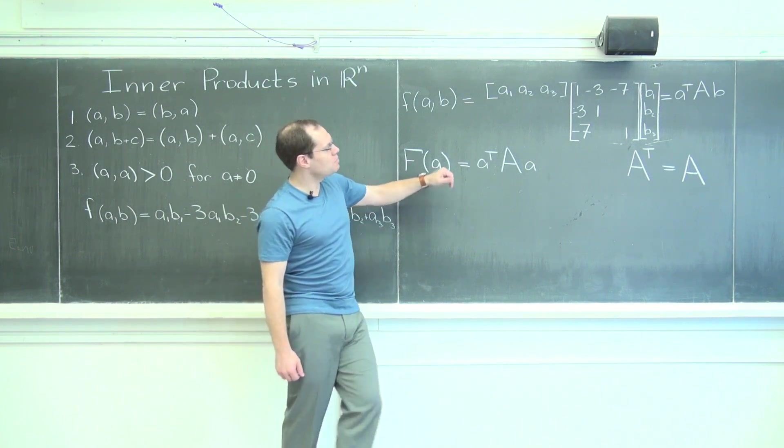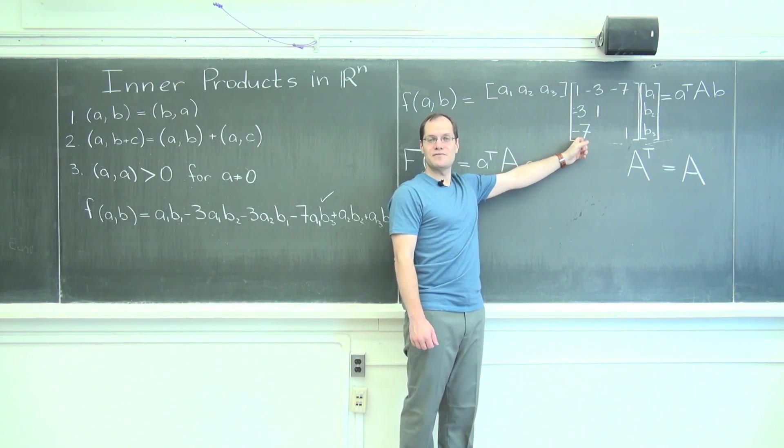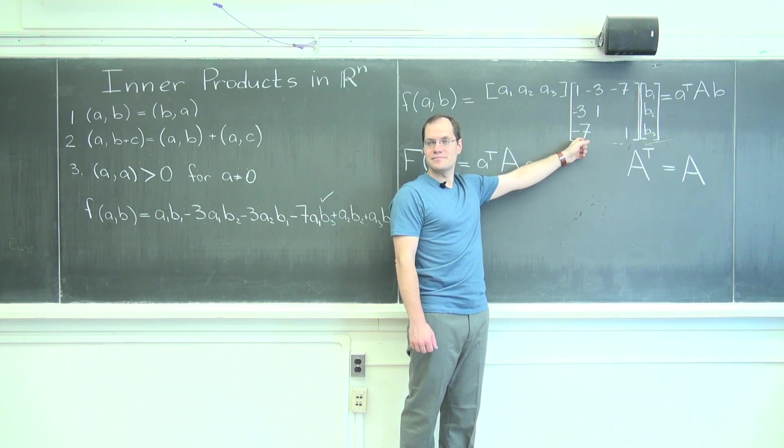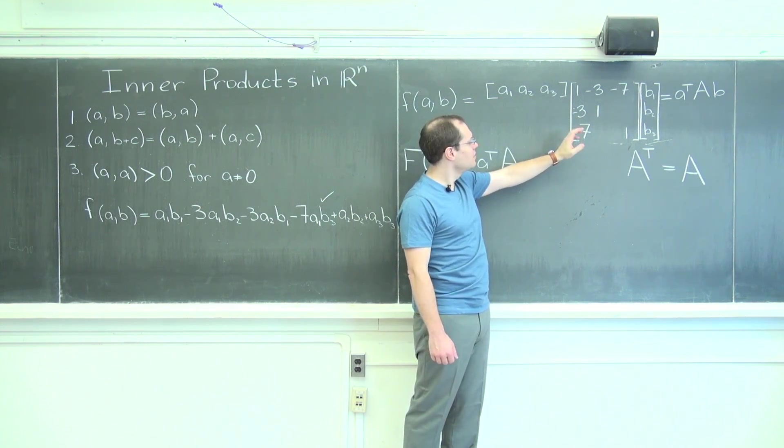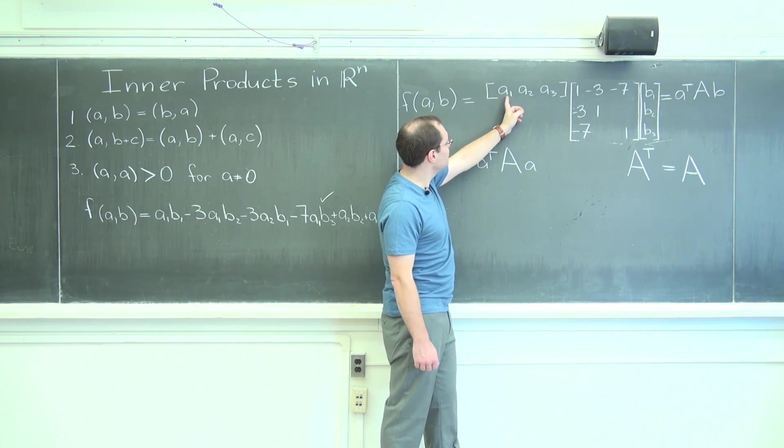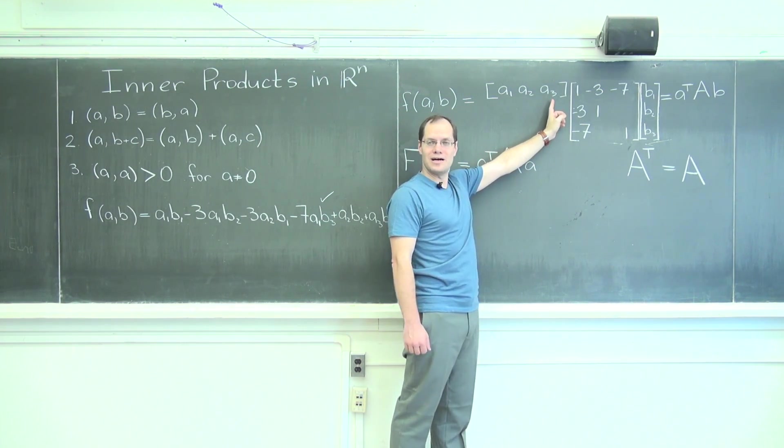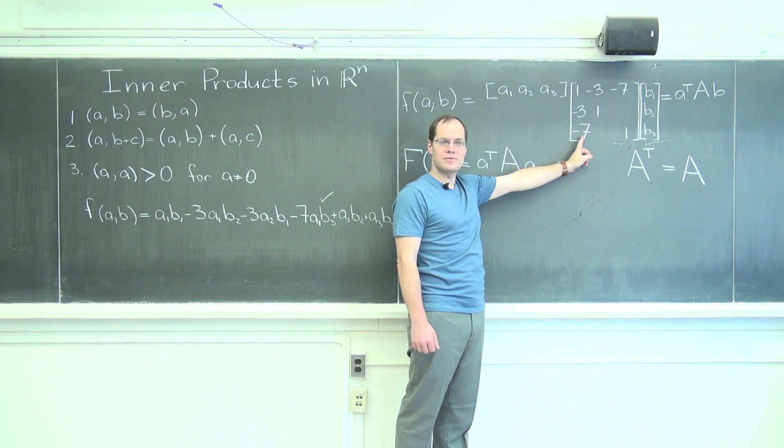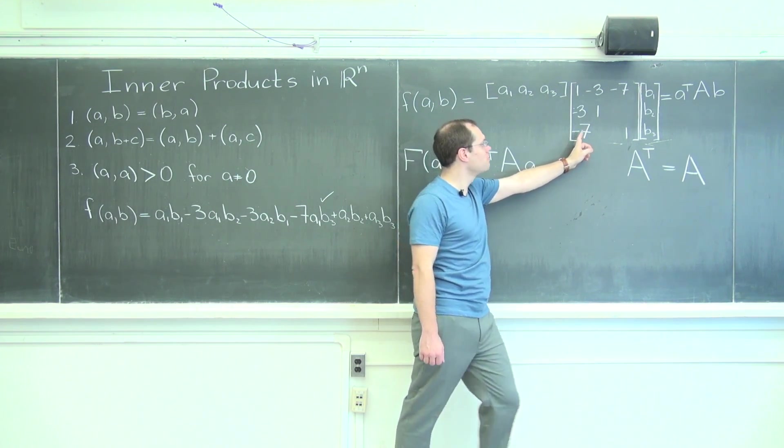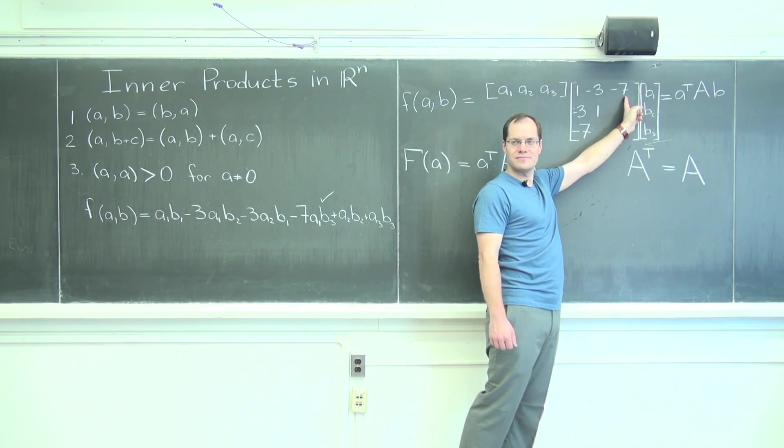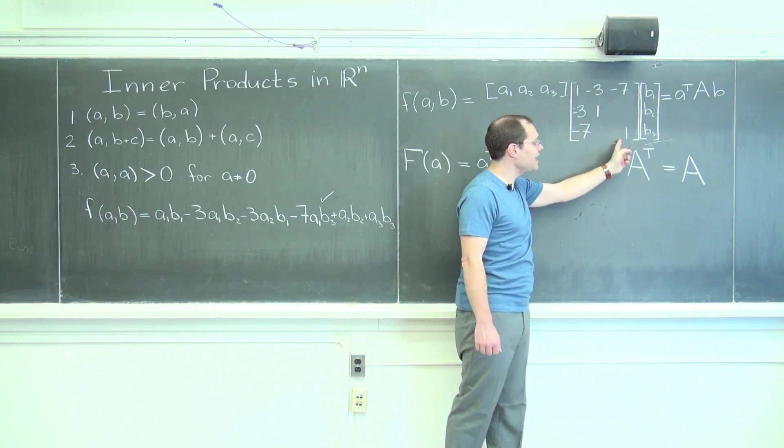And here you would probably guess no, because of this minus seven. You will think of some, of a vector, which probably has a one here and a one here, one-zero-one. And this term and this entry right here will contribute minus fourteen.